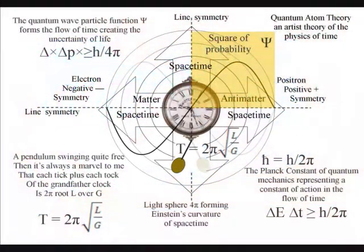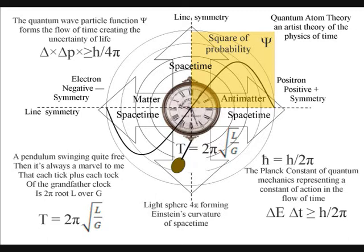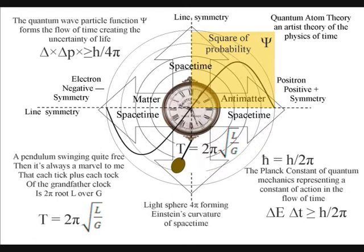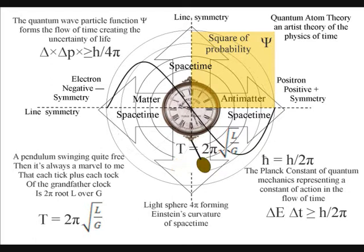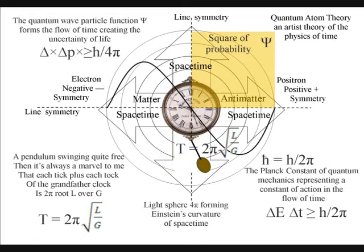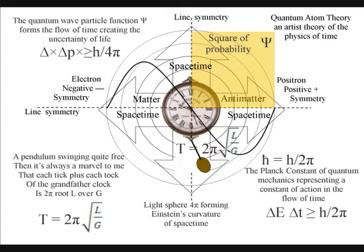Almost everywhere else in this diagram we see 2pi. The reason for this is that equations with 2pi have cylindrical symmetry — a form of line symmetry. This line symmetry is formed because when light comes in contact with matter it forms a photon-electron coupling, and we have matter-antimatter annihilation in just one direction, forming the arrow of time in that reference frame. In the lower right-hand corner of the diagram we have the Planck constant h over 2pi, representing a constant of action in the dynamic process that forms the arrow of time.